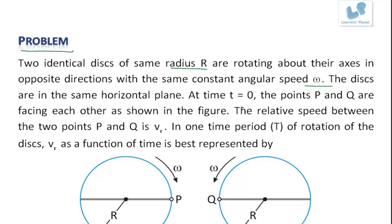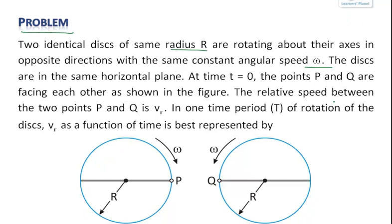At time t equal to 0, the points P and Q are facing each other as shown in the figure. The relative speed between the two points P and Q is vr. That means we are finding the magnitude of the relative velocity, which is known as relative speed.